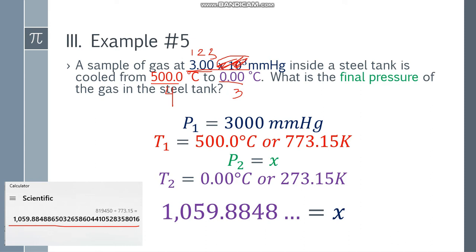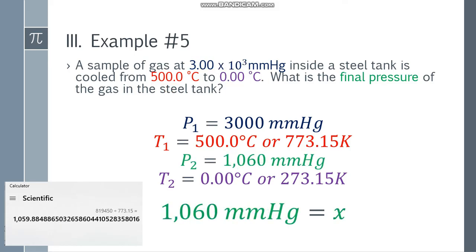Going back, the least number of significant figures we have is 3. So 1059.8848: 1, 2, 3, cut. Since it's 9, round up. So it becomes 6, making it 1060. Same unit since nothing was specified about changing units. This is the final answer: 1,060 mmHg or millimeters of mercury.